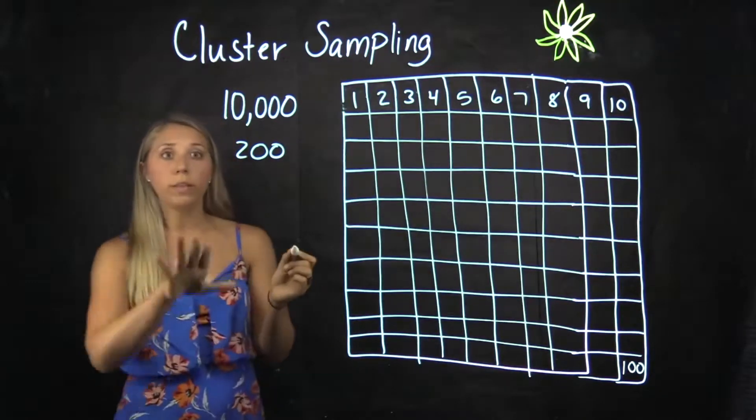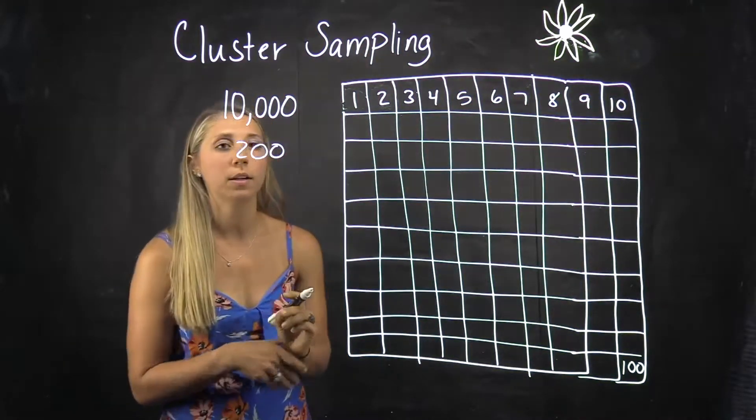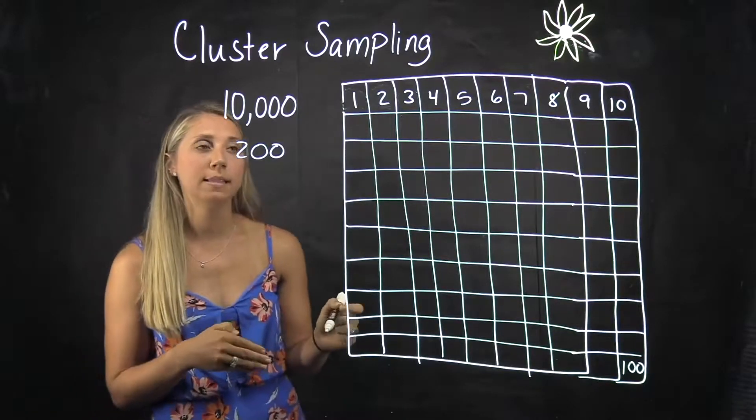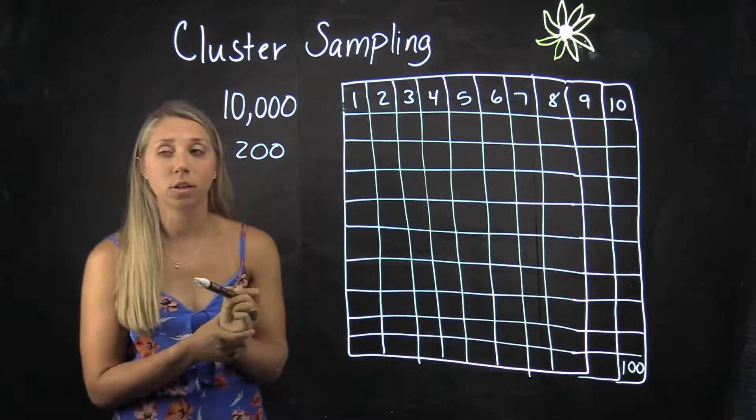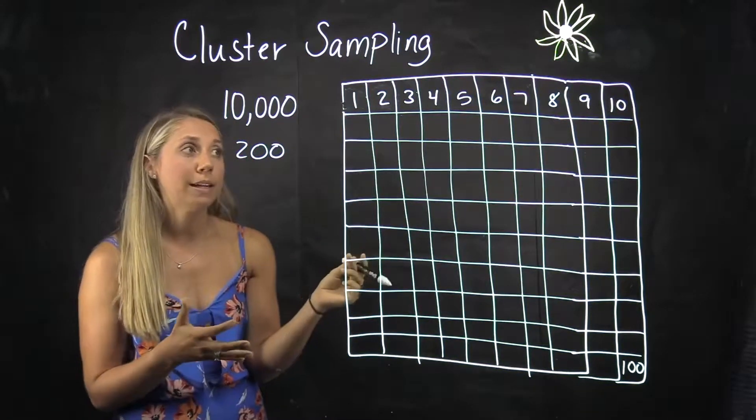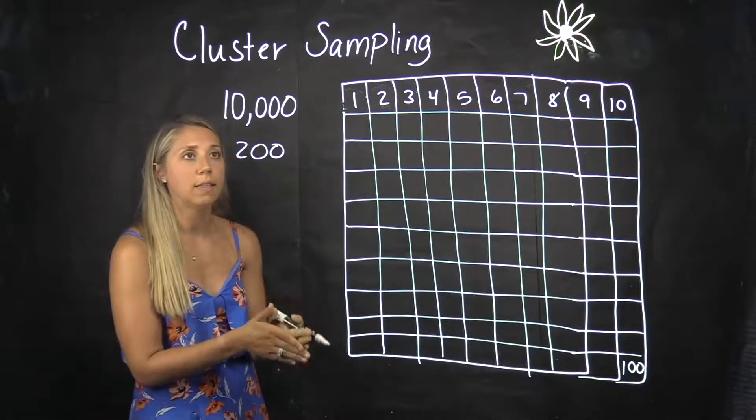If we only need a sample of 200 sunflowers, then we can pick two clusters to sample. Whereas in stratified sampling we have to go to each cluster and take some, we're going to take the entire cluster and measure all of the sunflowers in that cluster.